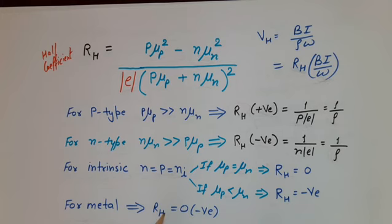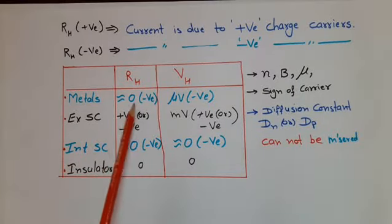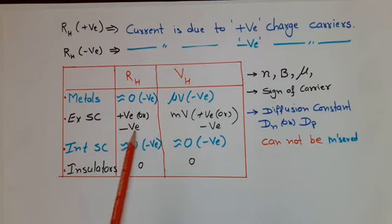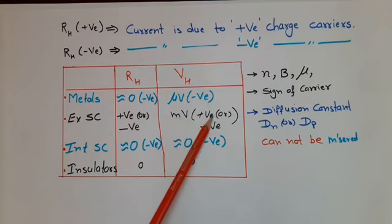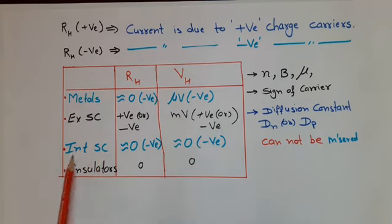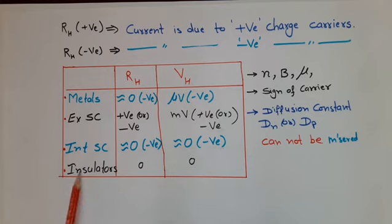For metals, the Hall coefficient is 0 or negative, and Hall voltage is in microvolts and negative. For extrinsic semiconductors, Hall coefficient is positive for P-type and negative for N-type, and Hall voltage comes in millivolts — positive for P-type and negative for N-type. For intrinsic semiconductors, Hall coefficient and Hall voltage are both 0 or negative. For insulators, both RH and VH are zero.